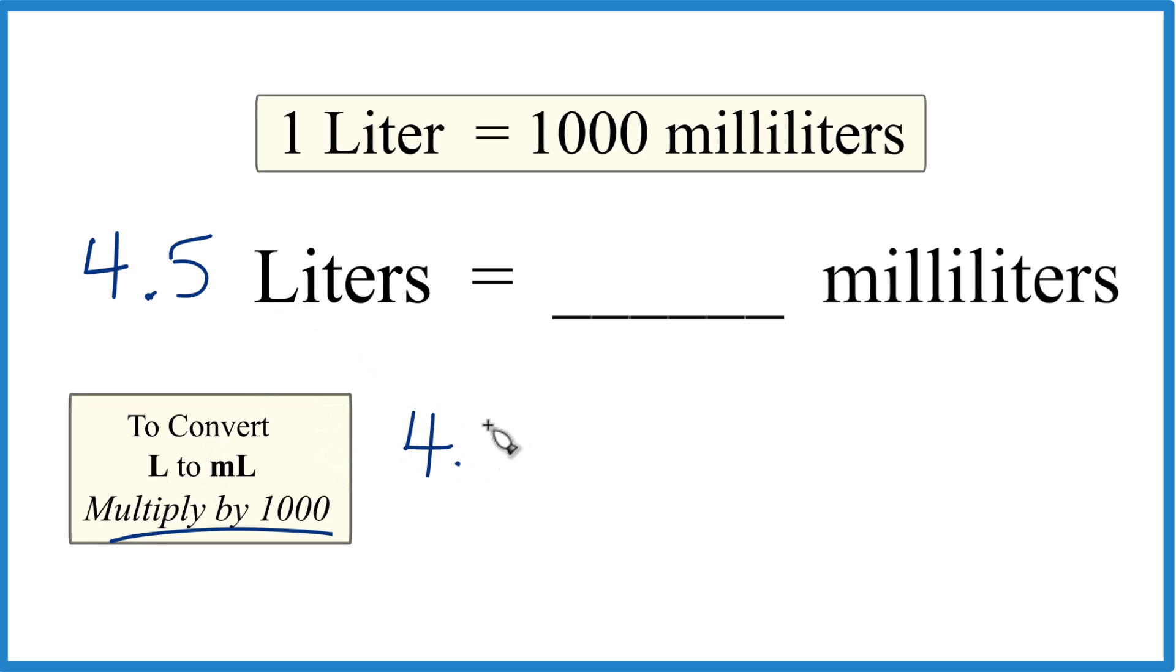So we have our 4.5 liters, and we're going to multiply that by 1,000. And that 1,000, that's a thousand milliliters in one liter. So we have milliliters per liter.